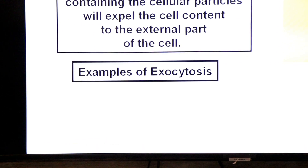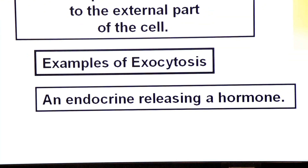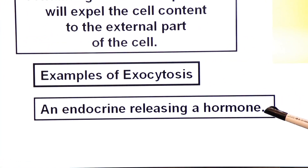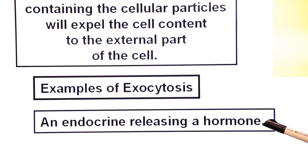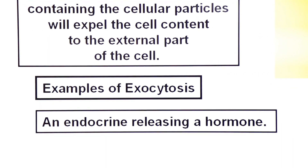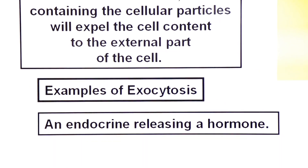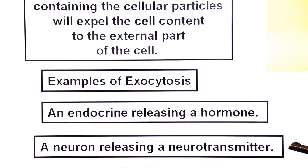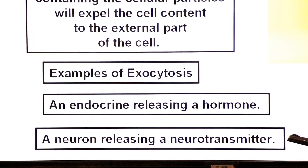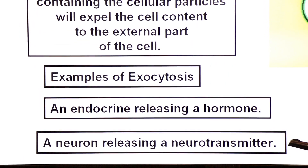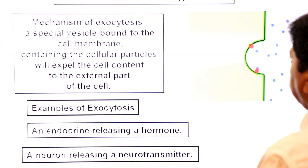Examples of exocytosis: first, an endocrine cell releasing a hormone — for example, an endocrine cell releasing insulin hormone. Second, a neuron releasing a neurotransmitter — for example, a motor neuron releasing acetylcholine. Both are examples of exocytosis.